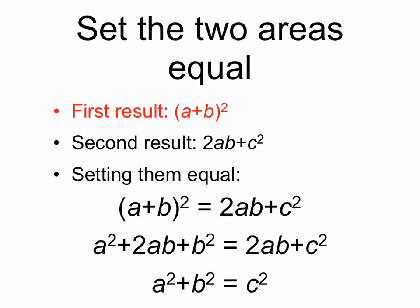Now we can set these two areas that we've calculated to be equal to each other, because they're both the area of this larger square. So our first result was a plus b squared. Our second result was 2ab plus c squared. And setting these equal, we can expand a plus b squared, so it's a squared plus 2ab plus b squared. The 2ab cancels on both sides, and we're left with a squared plus b squared equals c squared, the Pythagorean Theorem.